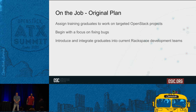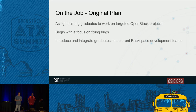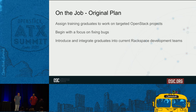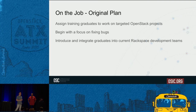We assigned training graduates to work on target OpenStack projects — what were the core projects we cared about, and how could we get them into a project surrounded by coaches that could train them on that specific project. We really started with bugs. If you're new to OpenStack and you're a new developer, find an easy bug, go through that whole process, get a couple of plus-twos. We had Intel folks integrate with existing Rackspace project teams, which worked pretty well and we made good progress there.